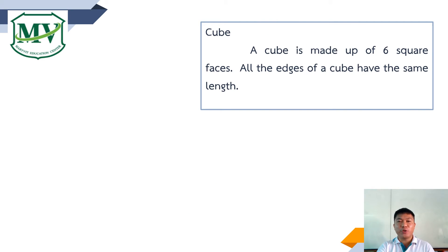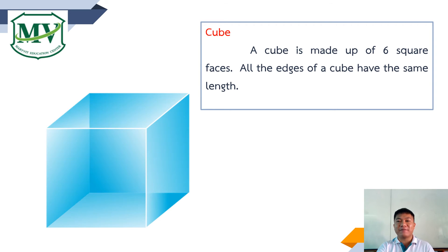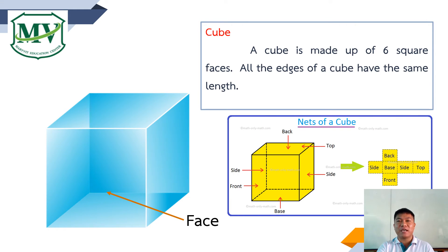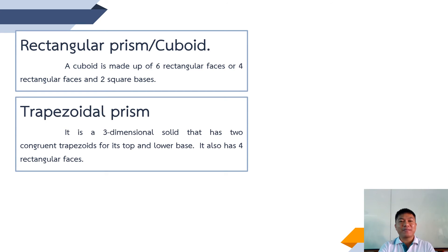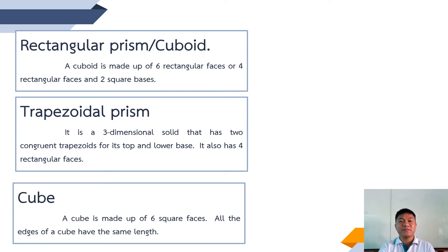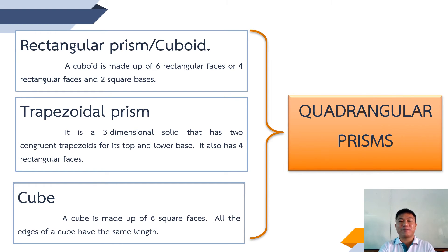The third type is the cube. A cube is made up of six square faces. Here is the net of a cube. As you can see, the back, top, side, base, and front face of a cube are all equal. To sum it up, rectangular prism or cuboid, trapezoidal prism, and cube are all types of quadrangular prism.